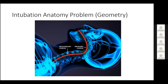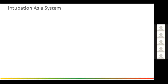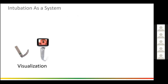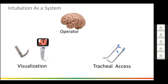This is the problem we have to overcome every day when we intubate — these are the natural curves of the airway and the geometry we'll be talking about repeatedly. Intubation is a system. We have visualization components — either DL or VL — and then we have tracheal access components, whatever we stick into the trachea, and we have the human operator.